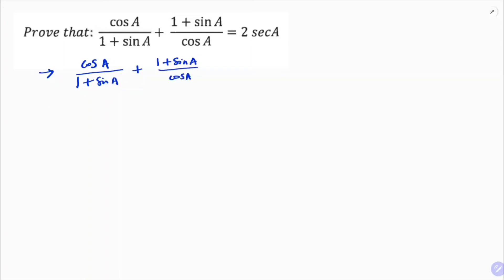Now here, I will take LCM. LCM is 1 plus sin A into cos A. In the denominator, we have 1 plus sin A, and LCM is 1 plus sin A into cos A. So here, I need to multiply cos, so cos into cos, here it will become cos square A.